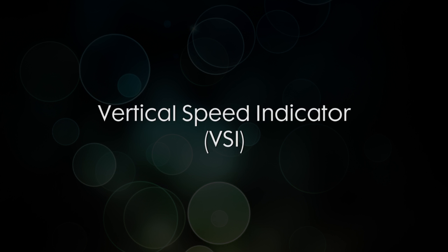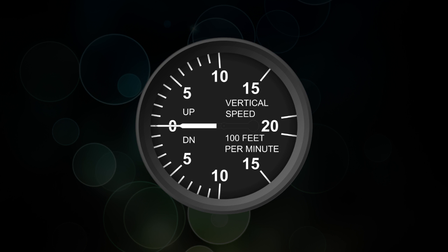Our next instrument is the vertical speed indicator, or VSI, and it shows rate of climb or rate of descent in hundreds of feet per minute. So the 5 on there will be 500 feet a minute, the 10 will be 1,000 feet per minute.